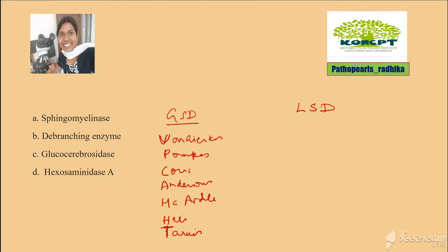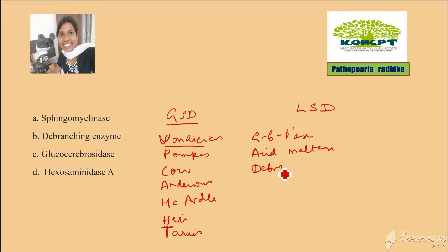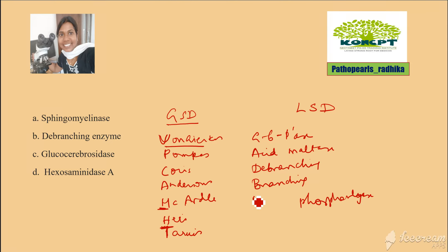The corresponding enzyme deficiencies: Von Gierke's disease is due to glucose-6-phosphatase deficiency. Pompe's is due to acid maltase. Cori's is due to debranching enzyme. Andersen's is due to branching enzyme. For McArdle's — muscle phosphorylase deficiency — and Hers' disease is hepatic phosphorylase deficiency. Tarui's disease is due to phosphofructokinase 1 deficiency.